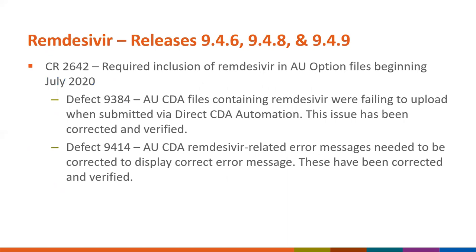I'm just going to discuss the releases for remdesivir. In release 9.4.6, the team added a requirement to include remdesivir as a required drug in the AU files beginning with July 2020 and forward. This update resulted in two defects. The first defect was that files containing remdesivir were failing to import when submitted via direct CDA automation—defect 9384, resolved in release 9.4.8. The second defect was that if there were errors with AU files containing remdesivir, the wrong error message was displayed—defect 9414, resolved in release 9.4.9. Please let us know if you have any further questions regarding these issues.